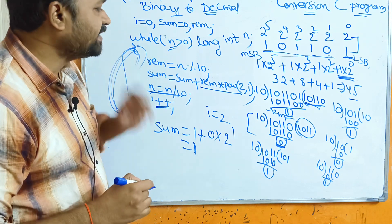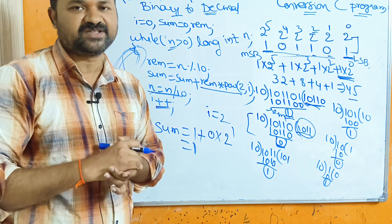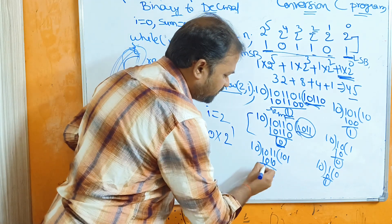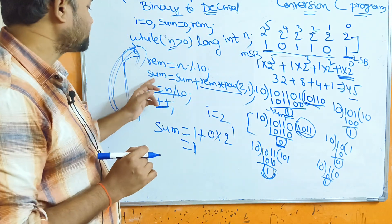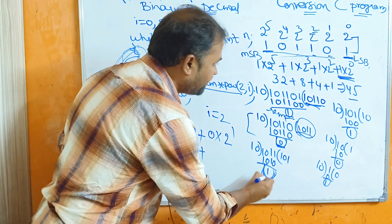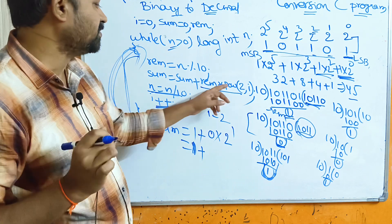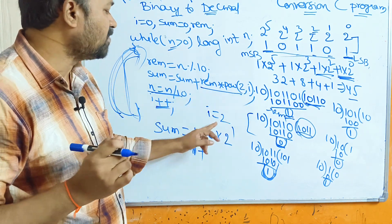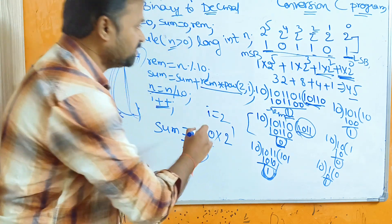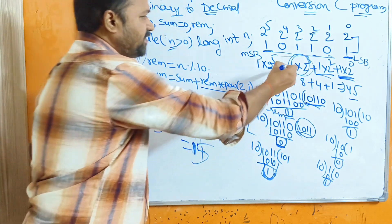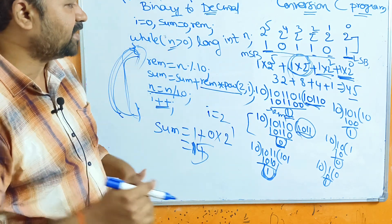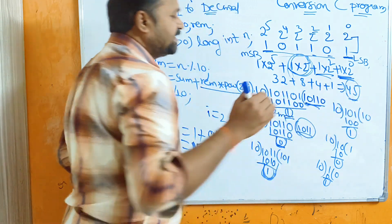Continuing: n = n / 10 gives 101, i becomes 3. Next iteration: rem = 1, sum = 5 + 1 × 2³ = 5 + 8 = 13. Likewise, for all remaining iterations, if we do all the multiplications and additions we will get 45 as the final result.